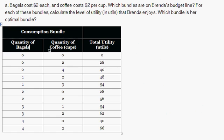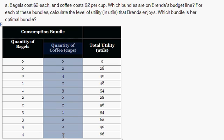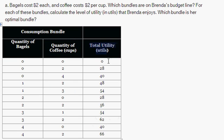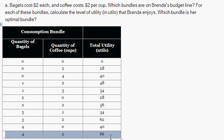So here's our table. In the first column we have quantity of bagels — 0, 1, 2, 3. In this column you have quantity of coffee, and over here you have the corresponding utility for each of these consumption bundles. So with 0 bagels and 0 cups of coffee, Brenda has 0 total utils. If Brenda were to eat 4 bagels and 2 cups of coffee, the total utility in utils would be 66, and then all the other combinations.